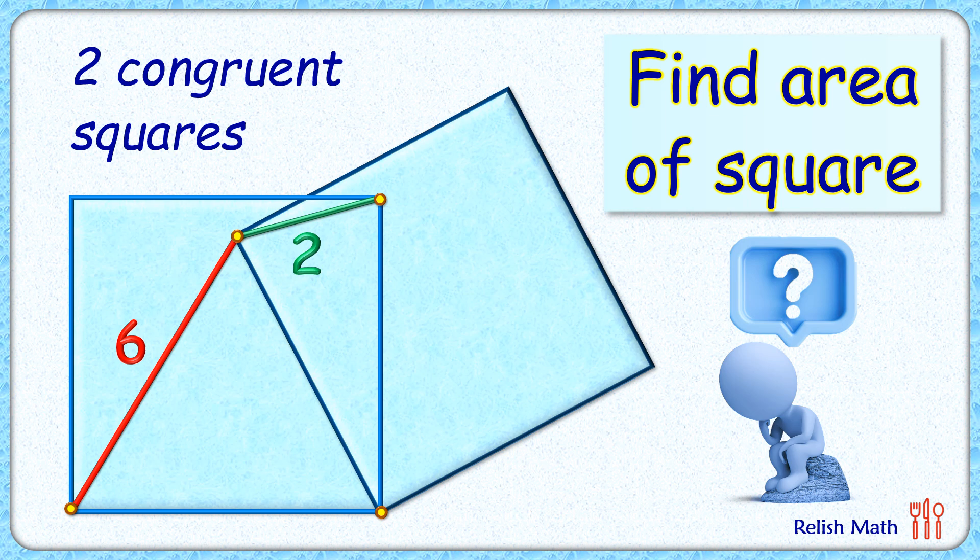Wow, this is an interesting question. Given to us are two congruent blue squares sharing a common vertex. The distance between these two vertices is six centimeters, and between these two vertices is two centimeters. The exciting part is with this limited data, we have to find the area of each square.